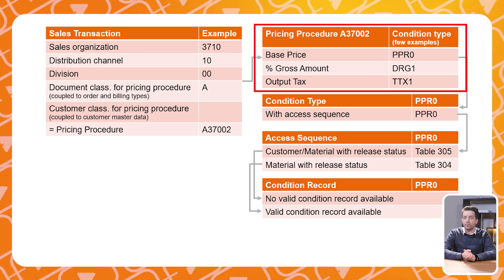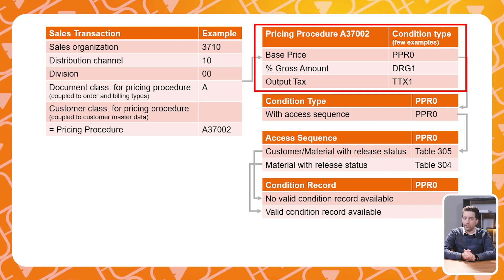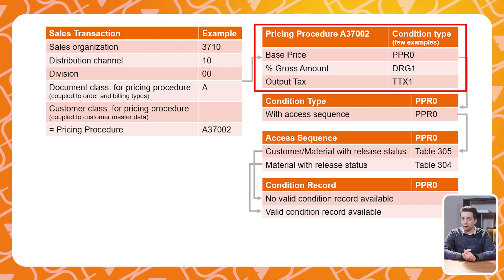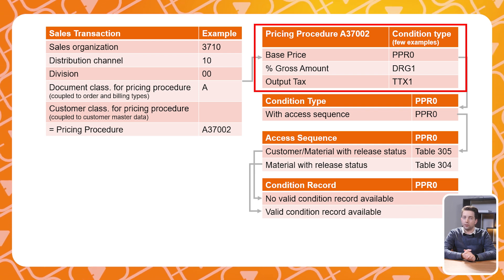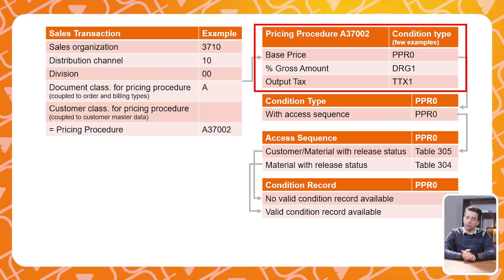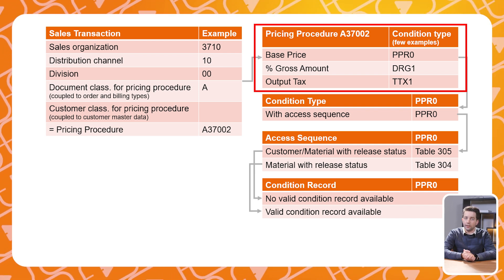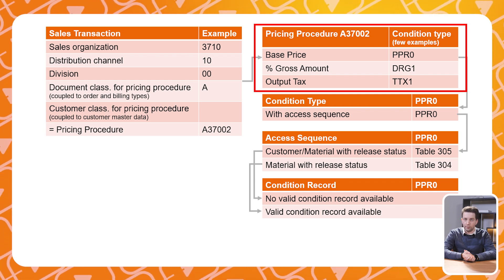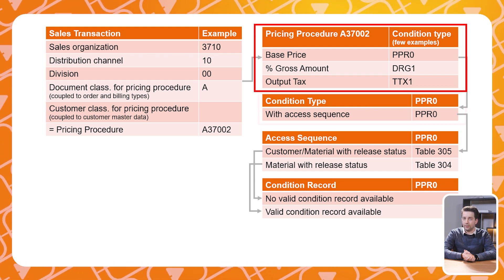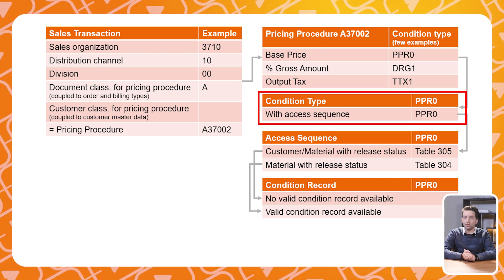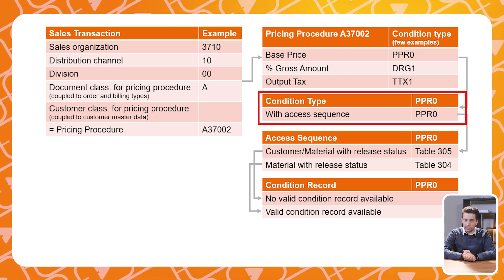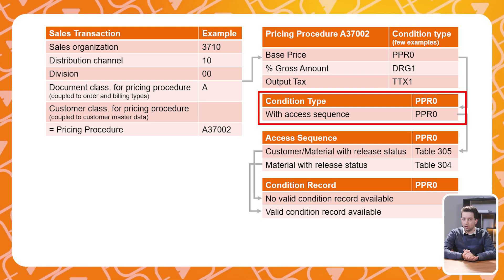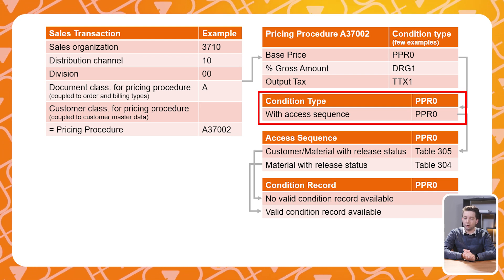The pricing procedure is a framework that defines a sequence in which different condition types are applied during pricing. The pricing procedure can also be adjusted based on the pricing strategy. It often contains condition types such as the base price, discounts, surcharges, freight costs and taxes. A condition type represents a specific pricing element — examples are the base price, discount, a surcharge, taxes or freight costs.